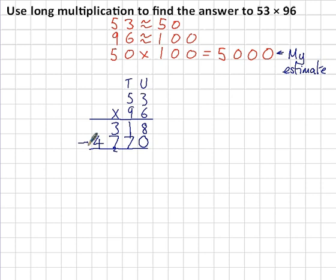Let's add those two numbers together. 8 plus 0 is 8, 1 plus 7 is 8, 3 plus 7 is 10, and 4 plus 1 is 5. 5,088 is my final answer. It's very close to 5,000, so I'm guessing either I had a very good estimate or I've got the answer right. I'm hoping I've got both a good estimate and the correct answer.